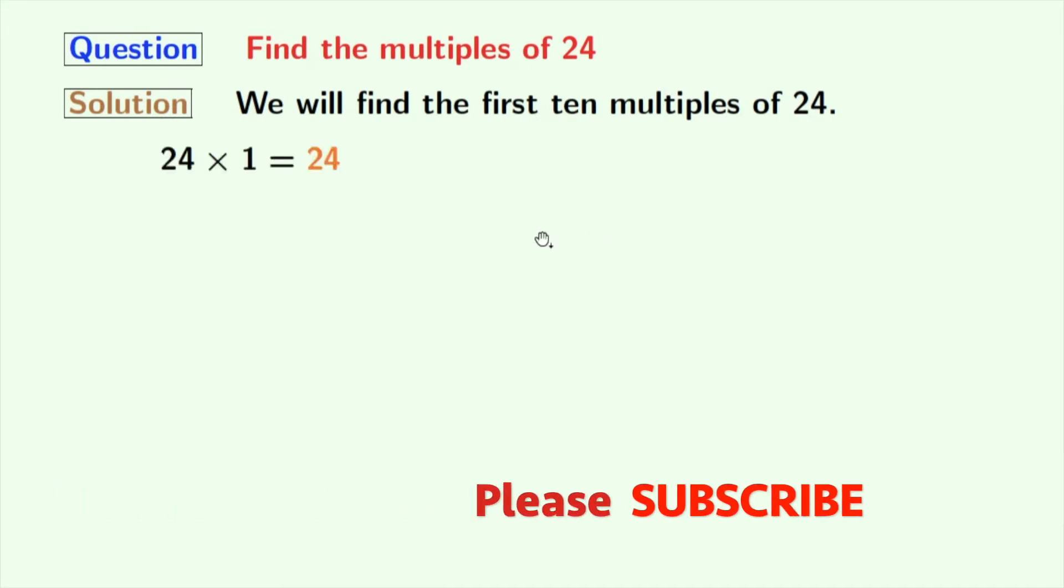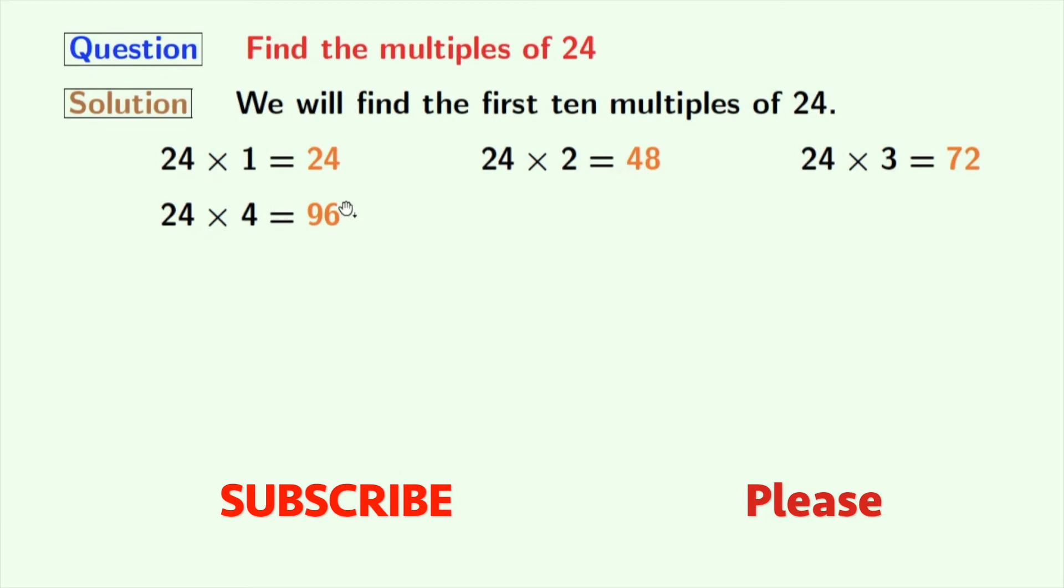That gives us 24. Multiplication of 24 and 2 gives us 48. Multiplication of 24 and 3 gives us 72. Multiplication of 24 and 4 gives us 96. Multiplication of 24 and 5 gives us 120.